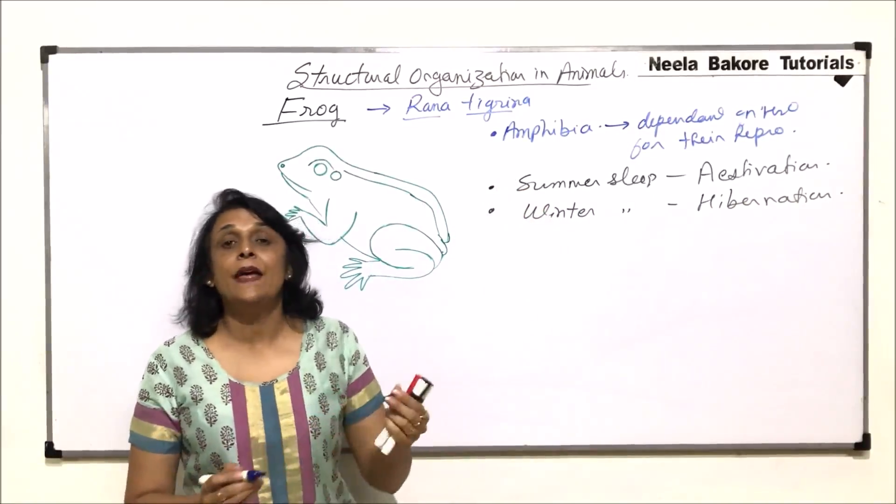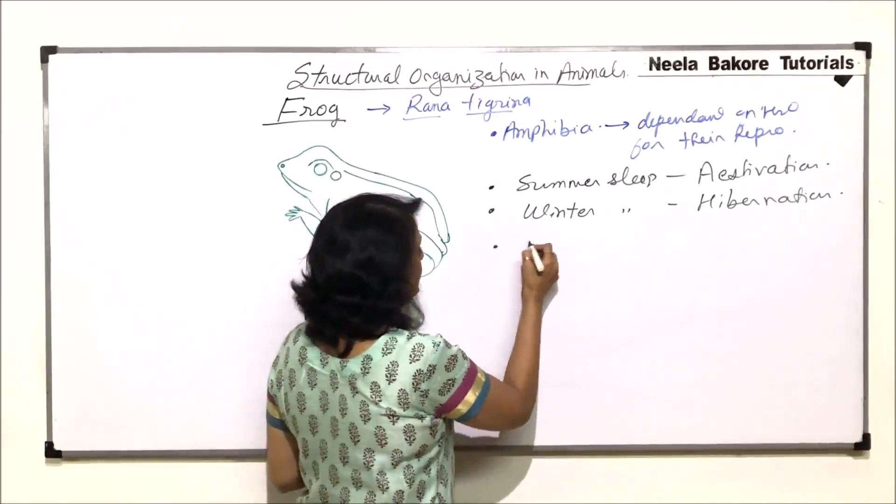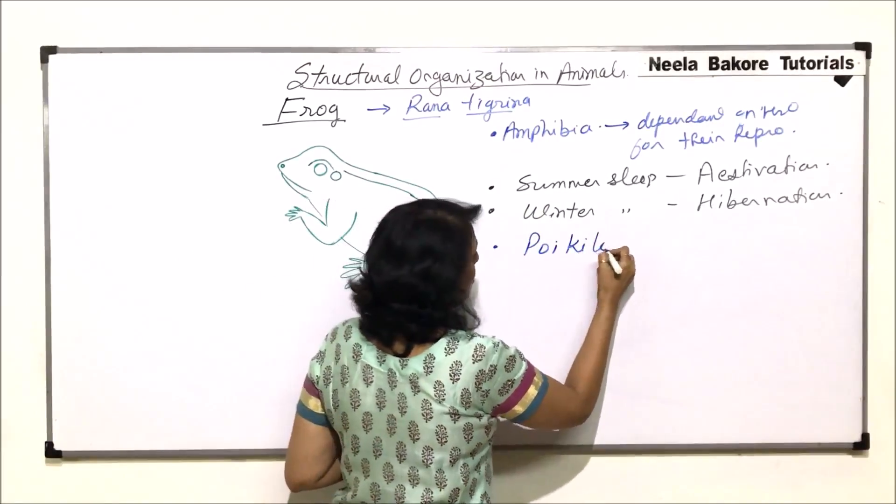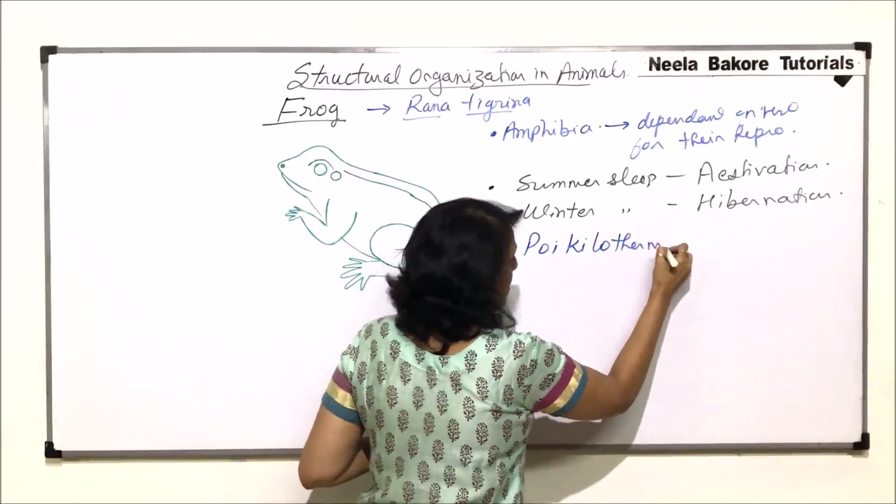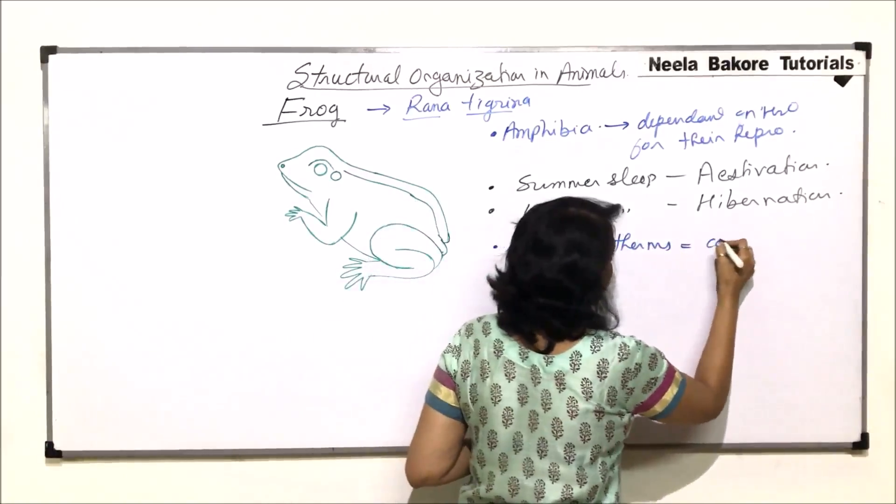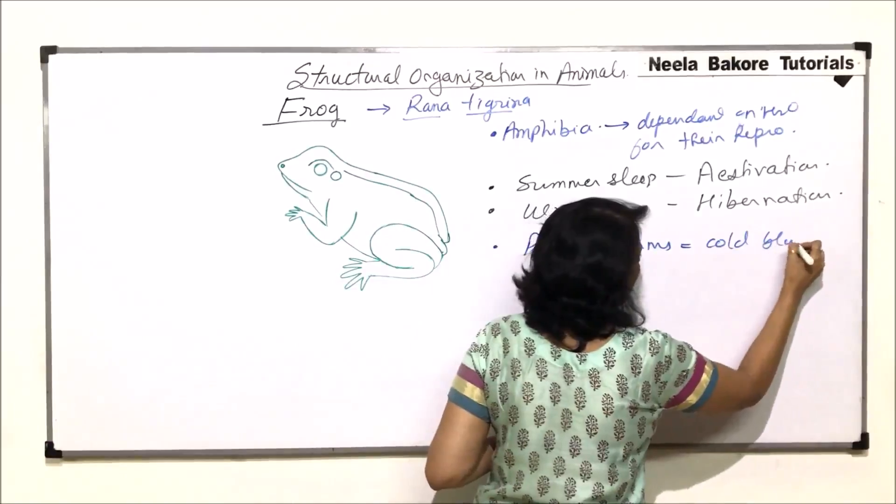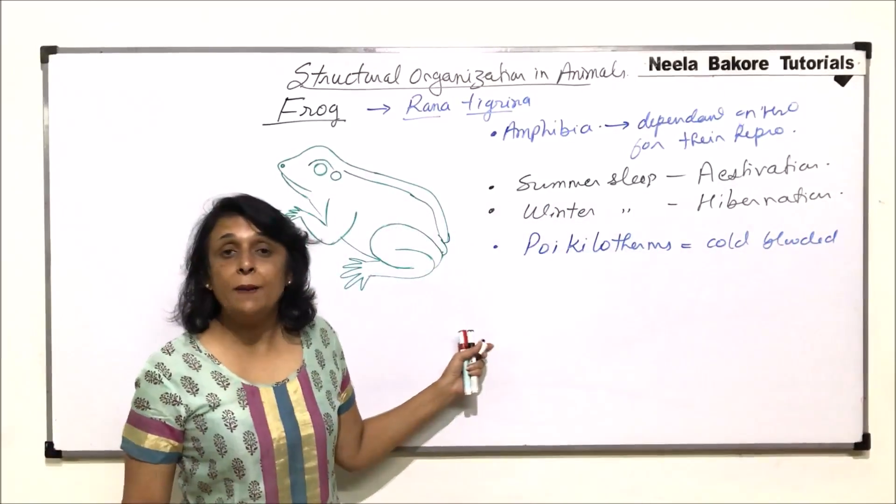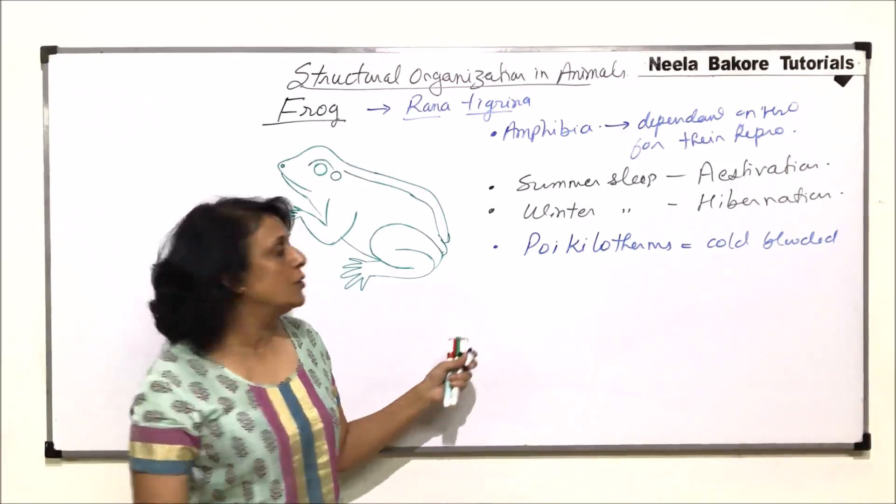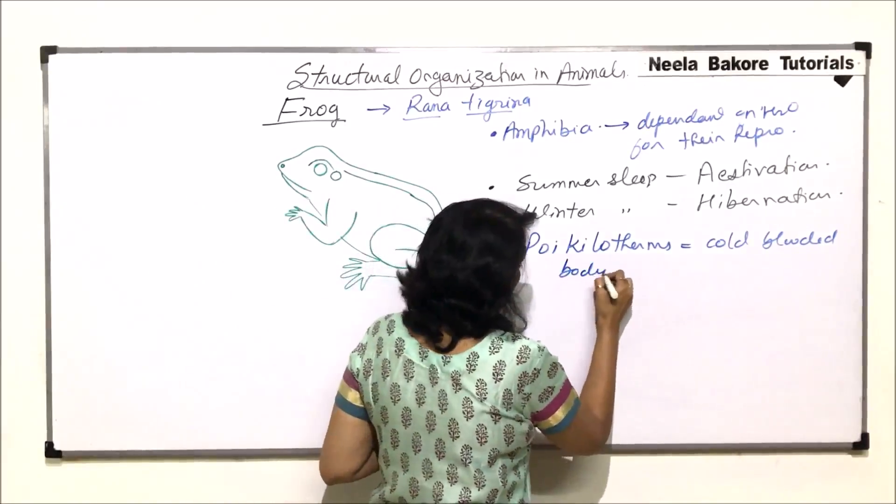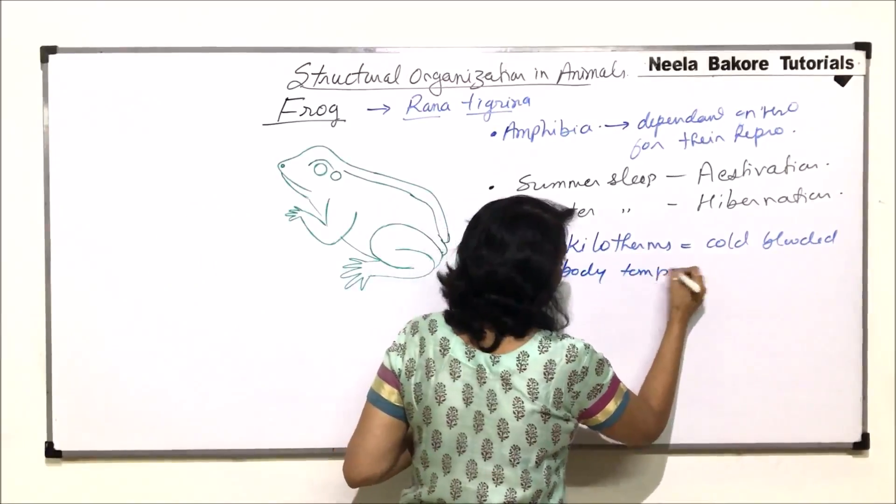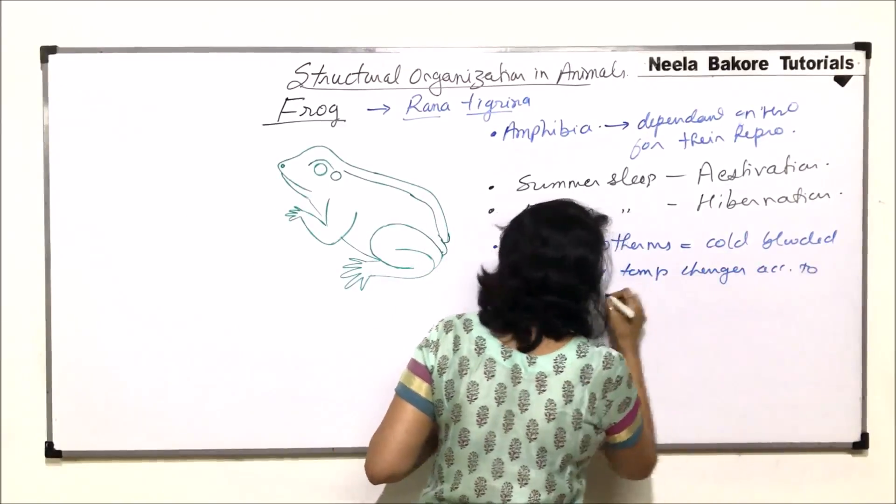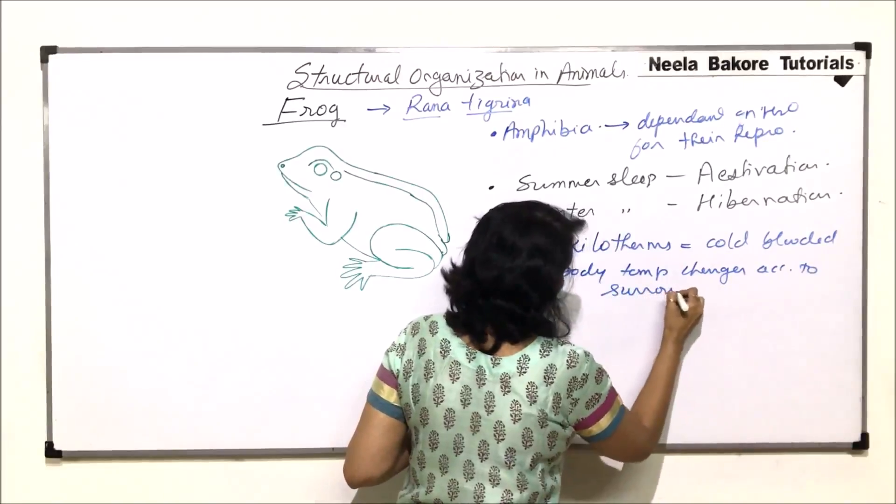The reason is that they are cold-blooded, and we call them as poikilotherms. Poikilotherms means they are cold-blooded. Cold-blooded means their body temperature changes according to surrounding. Body temperature changes according to surrounding temperature.